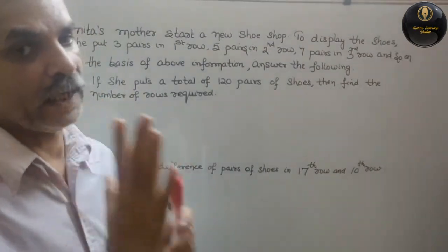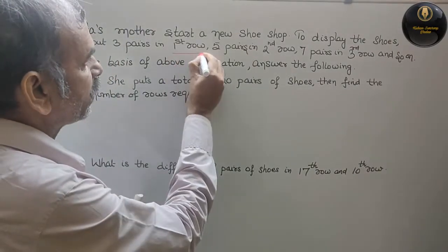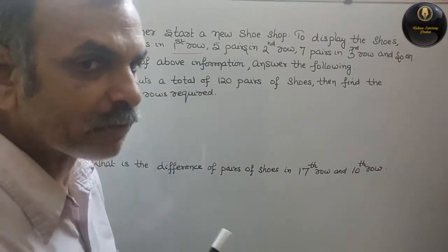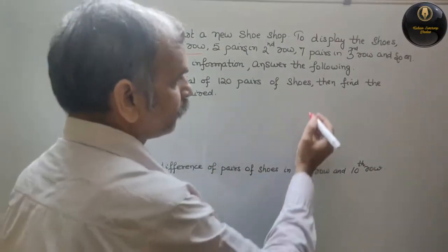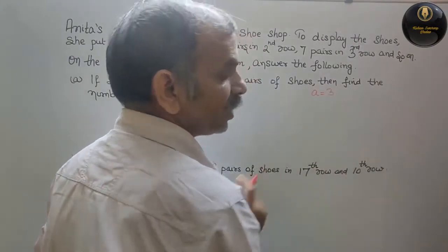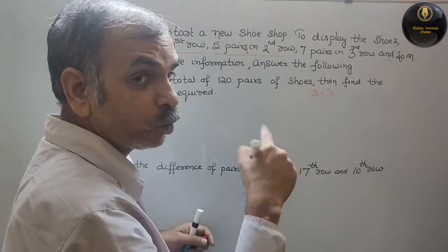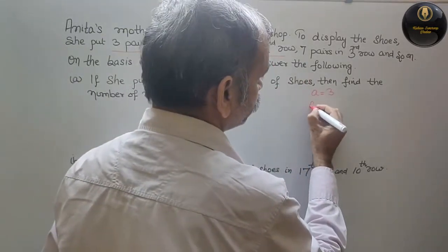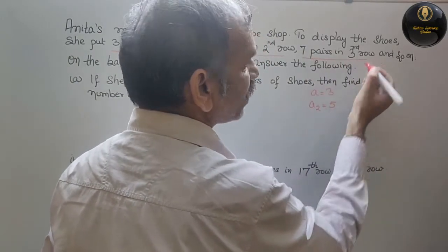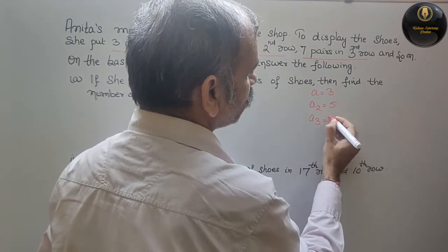In the first row there are 3 pairs, so A1 is equal to 3. In the second row there are 5 pairs, so A2 is equal to 5. Next, in the third row there are 7 pairs, so A3 is equal to 7.